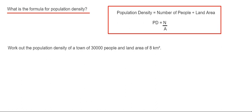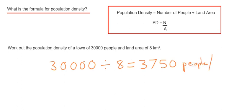So we just divide the number of people, which is 30,000, by the land area, which is 8, and that will give an answer of 3,750. The units would be people per kilometers squared.